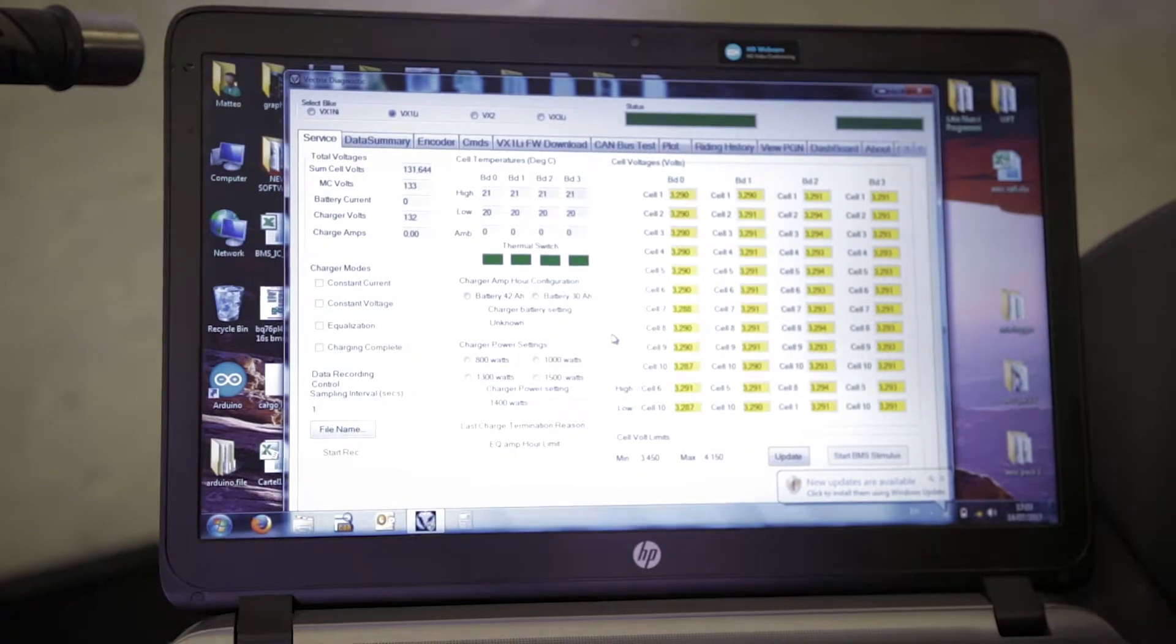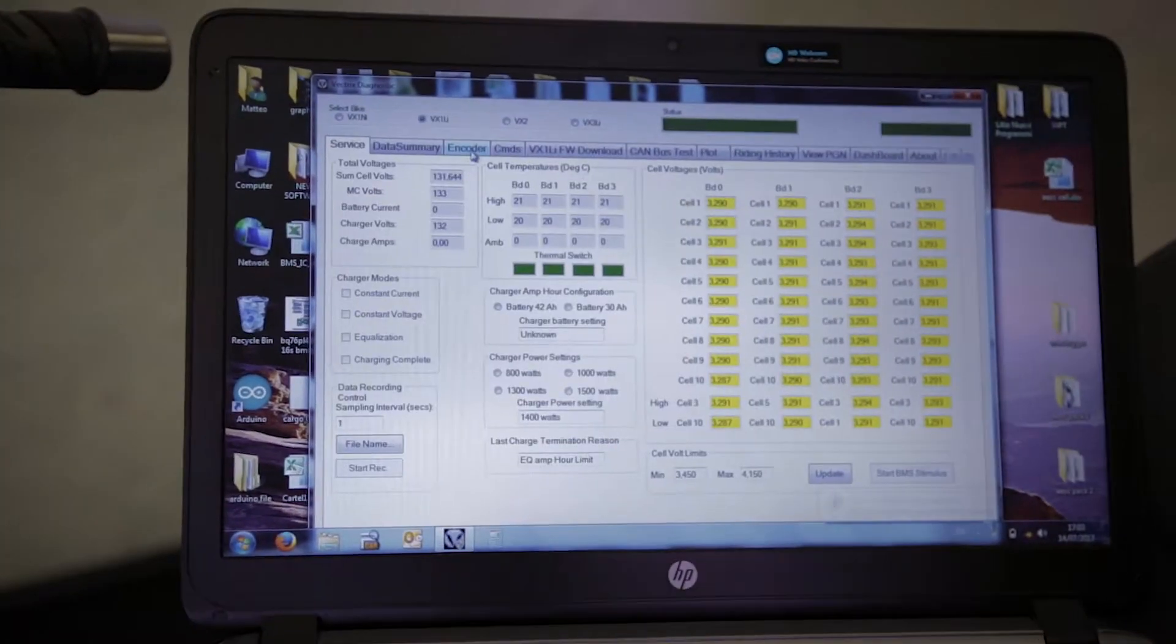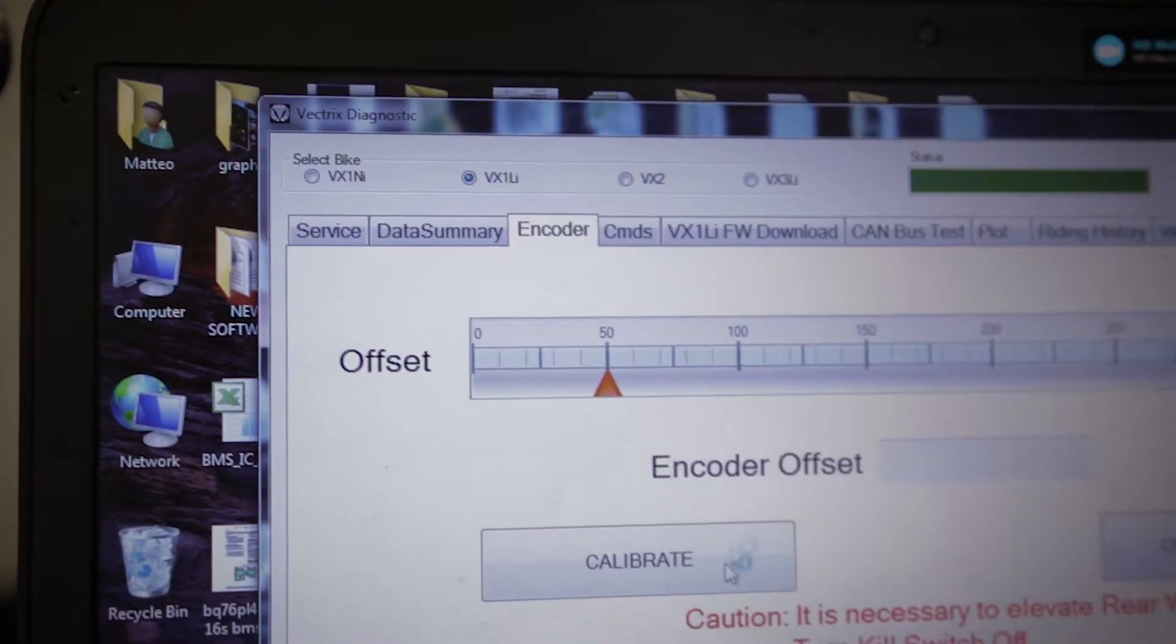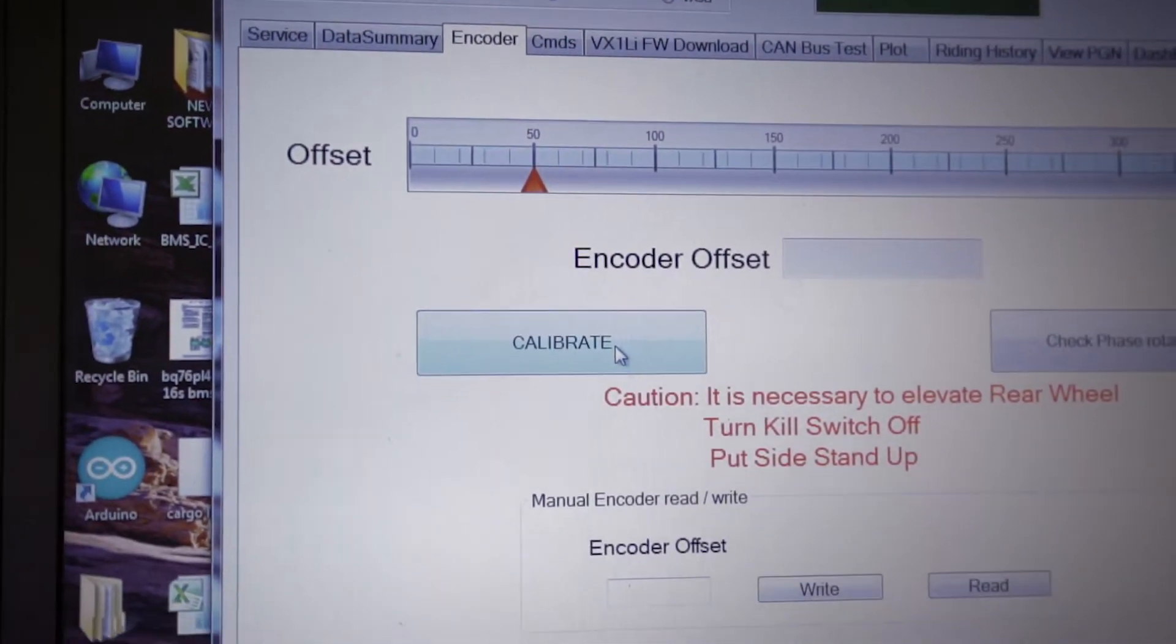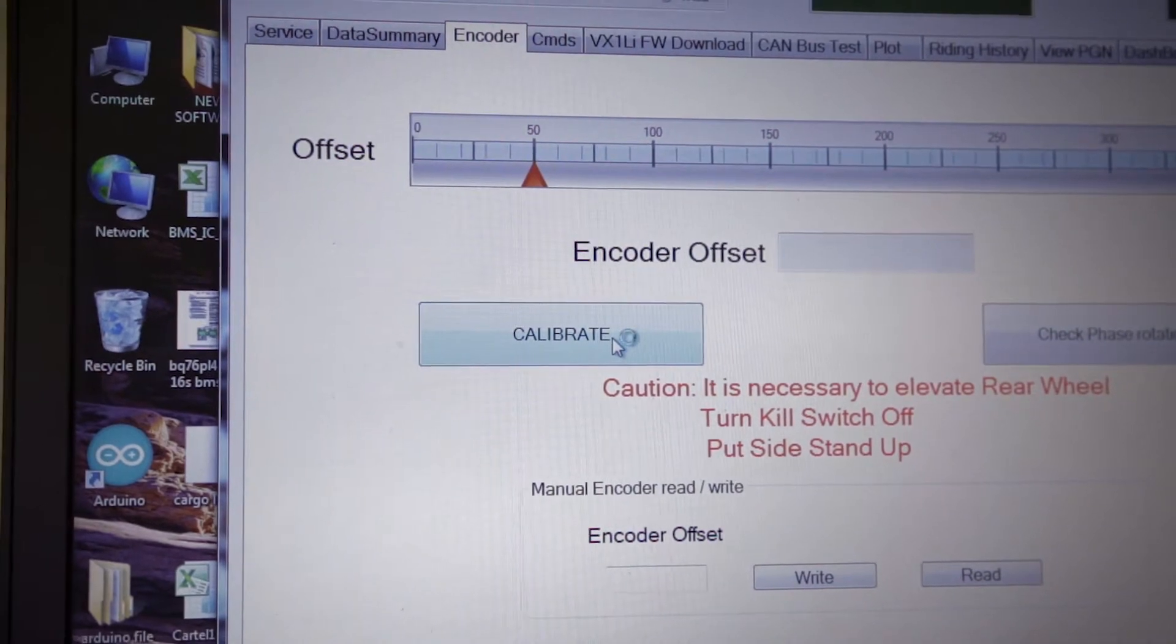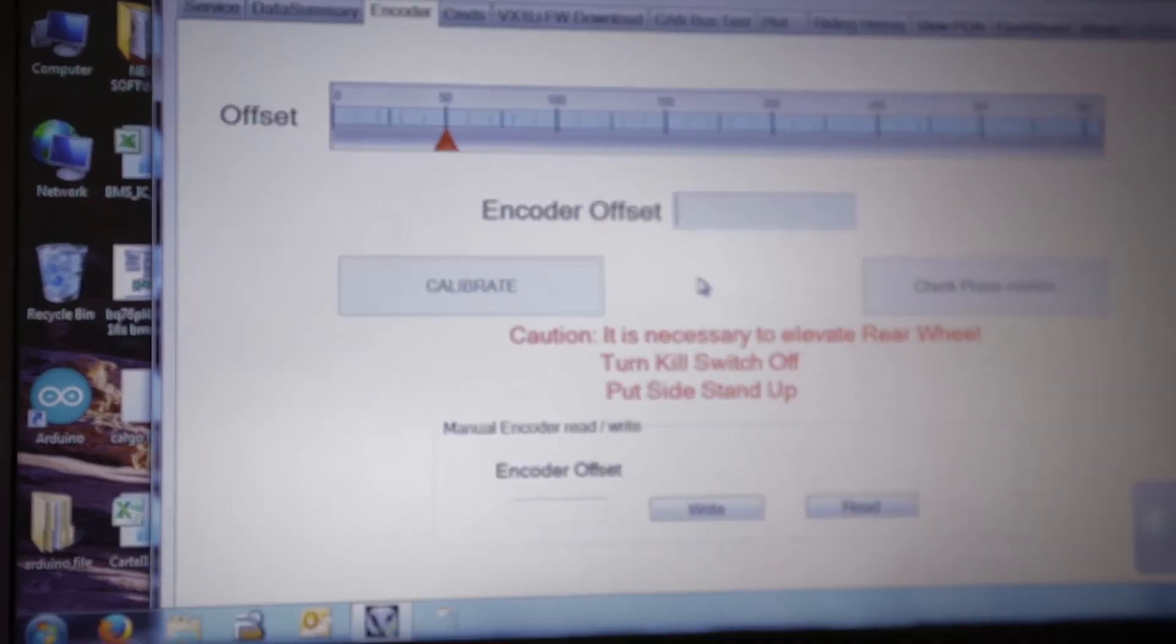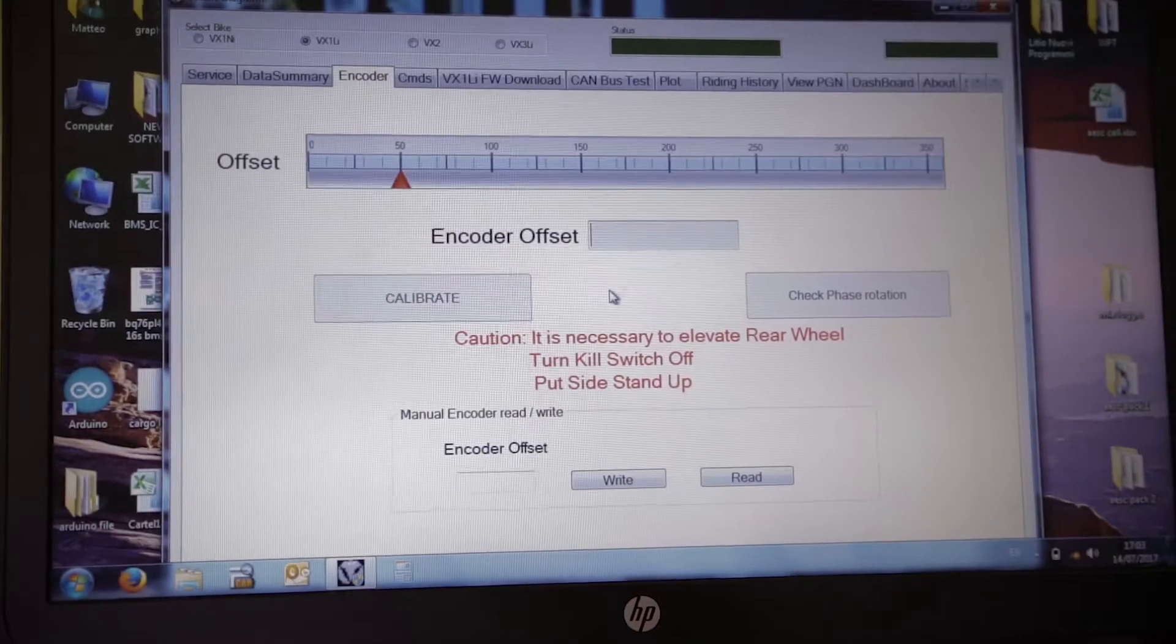So in order to calibrate the encoder, we go to the specific encoder calibration page over here and we just hit the calibration button to start the same procedure shown before.